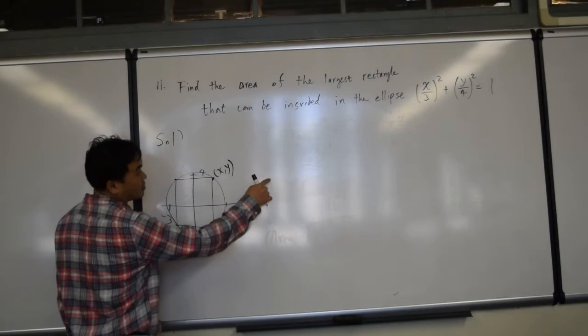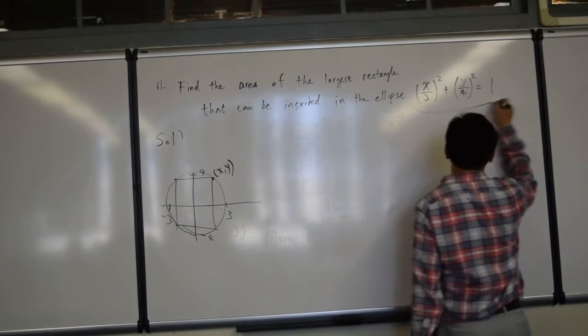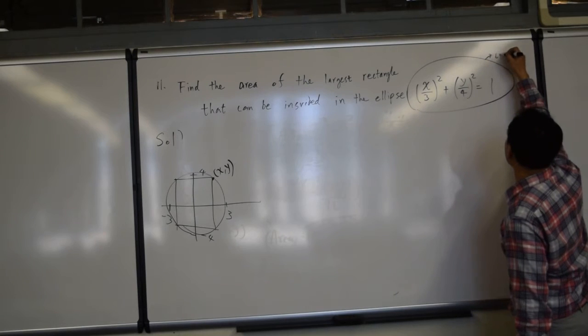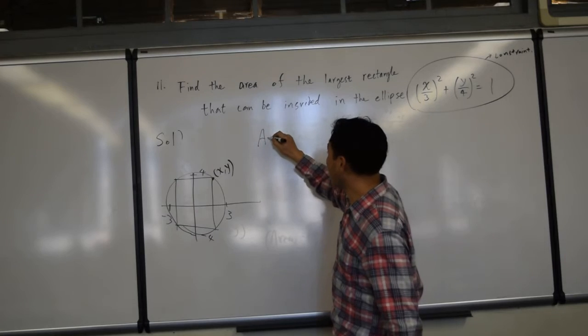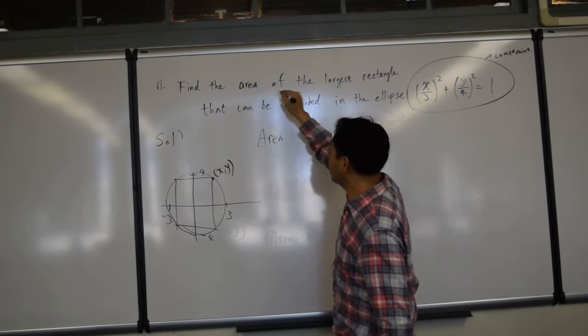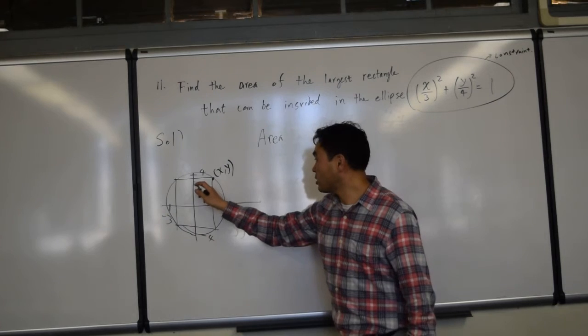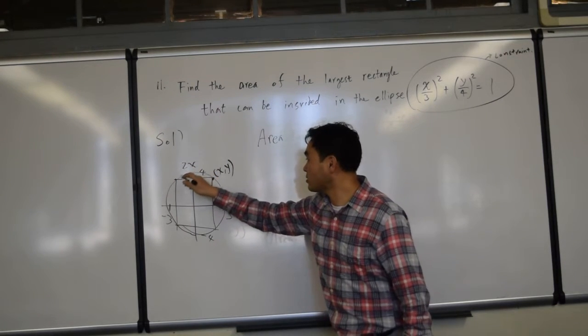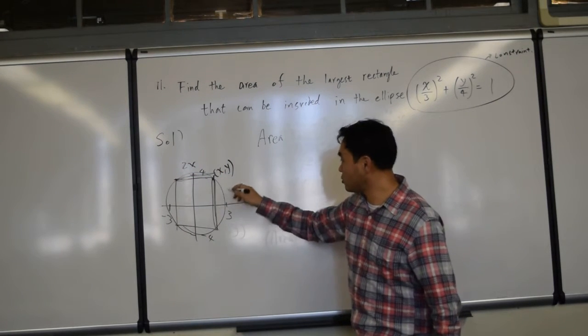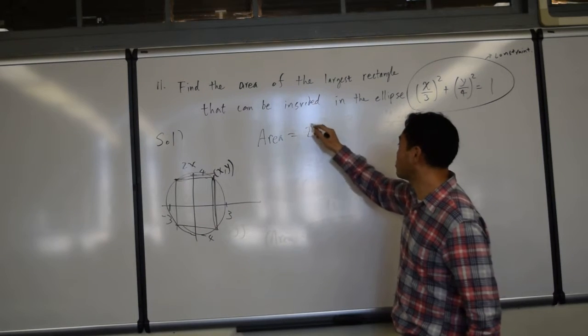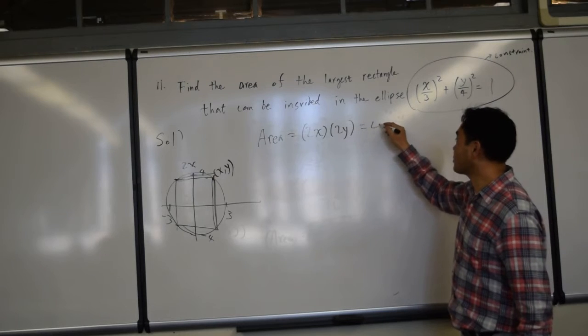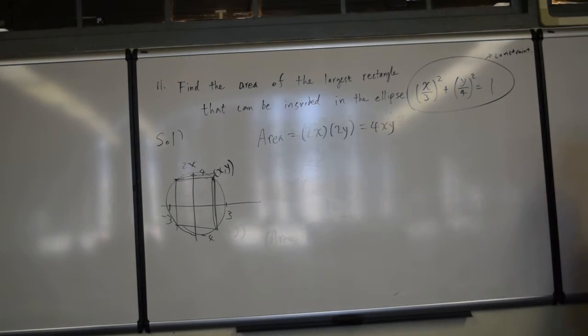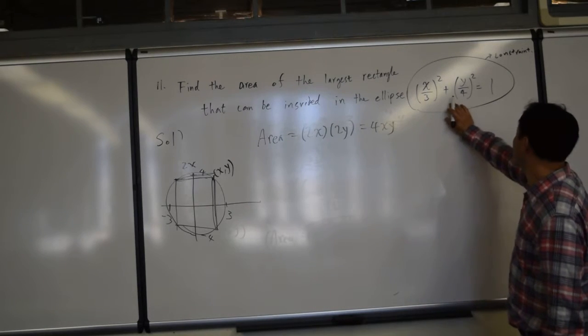Because x, y satisfies this equation, you can think of this as a constraint. And what's our target? Target is the area. We're trying to maximize the area. Because this length is 2x and this length is 2y, the area equals 2x times 2y, which gives you 4xy.